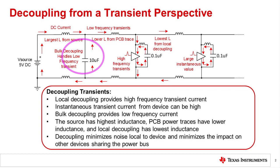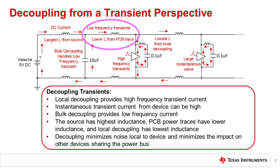Generally, one bulk decoupling capacitor can supply many devices and is placed at the power supply entry for the board. The bulk decoupling capacitance is sized at least 10 times the sum of all the local decoupling capacitors. A commonly used bulk decoupling capacitance is 10 microfarads, and a common local decoupling is 0.1 microfarads or 1 microfarad. By providing the high frequency transient current, the local decoupling minimizes the variation in the local device's power supply voltage and prevents the transient current demand from disrupting the power supply bus and other devices.